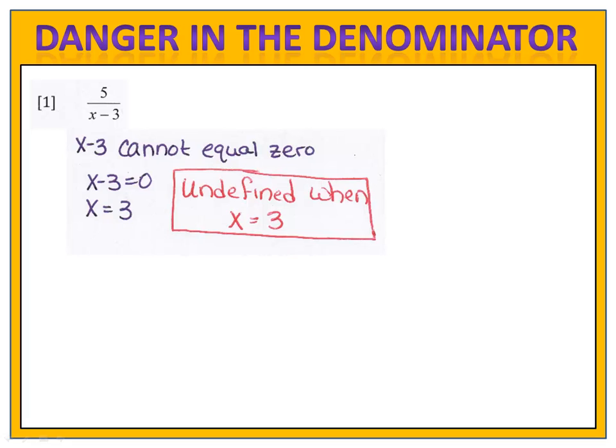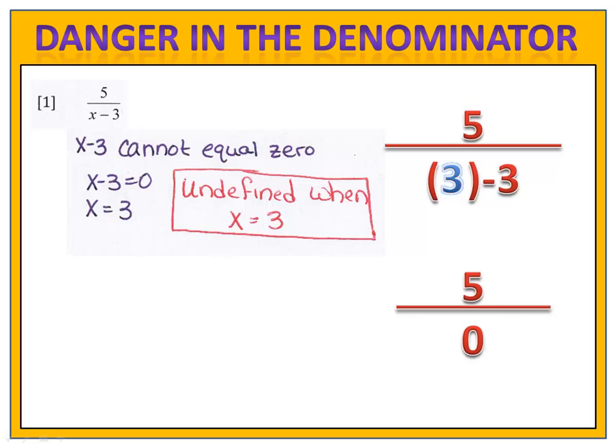we see that x cannot equal 3. If x were 3, we'd have 5 over 3 minus 3 — that's 5 over 0, and we can't divide by 0. So in this fraction, we could use any number for x, but we can never plug a 3 into it.